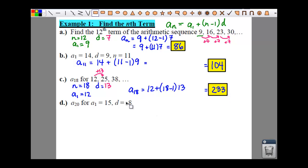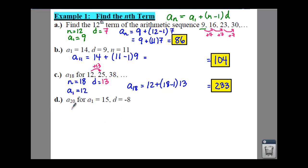And then finally for d, you do the same thing that you did in your other problems. It gives you a sub 20. It gives you a sub 1 and d. Now it doesn't give you n specifically, but it does say right here a sub 20. Isn't that equal to a sub n? Which would mean that n would be equal to 20. So if we're going to plug all these values in and go ahead and pause it.